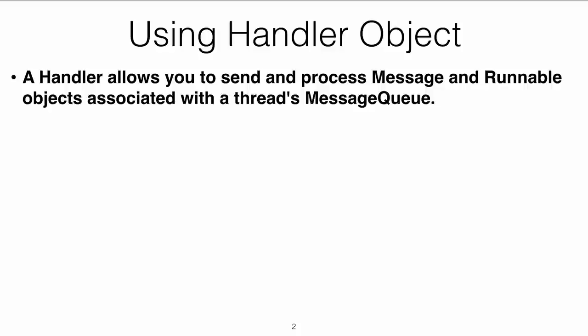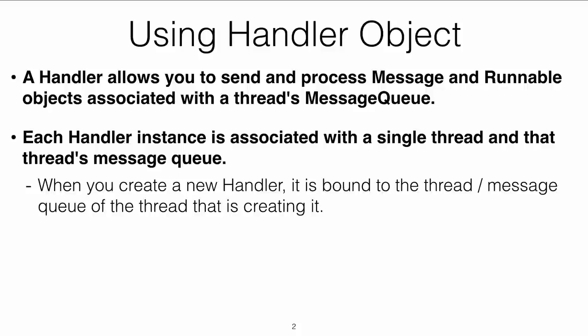The child thread cannot change the UI directly. So what it can do is compile a runnable, and inside that runnable are the instructions required to change the UI. The runnable will be received by the main thread and executed in the main thread context. Note that the handler instance is associated with whoever creates it, so if the main thread creates the handler object, it has access to the main thread message queue. Make sure to create the handler object in the context of the main thread.